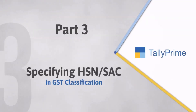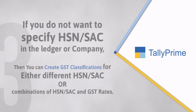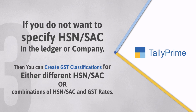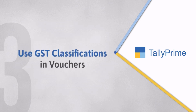Now let's see how to use GST classifications to ensure that your vouchers don't get into the Uncertain Transactions, Corrections Needed section. If you do not want to specify HSN or SAC in the ledger or company and want to specify it during voucher creation, you can create GST classifications for different HSN or SAC values or combinations of HSN or SAC and GST rates, and then use them in the voucher.